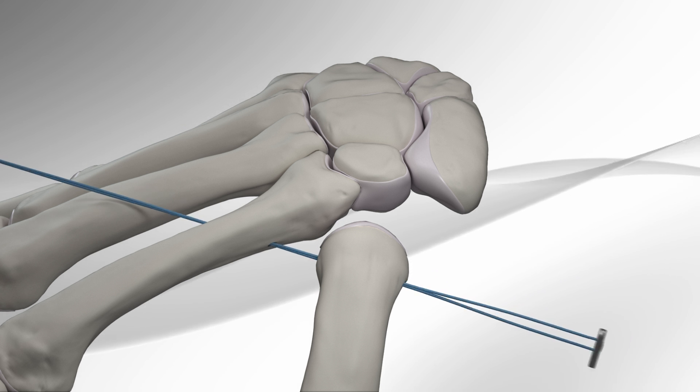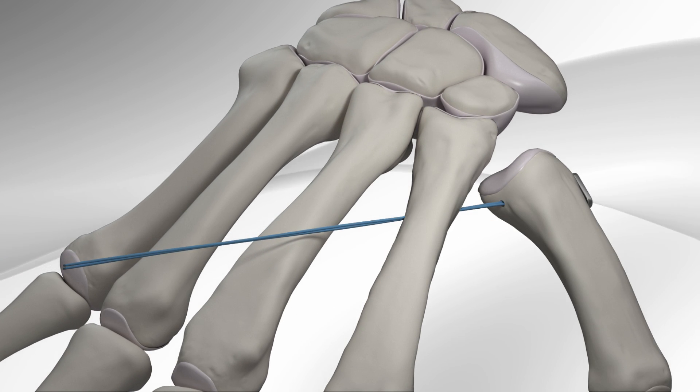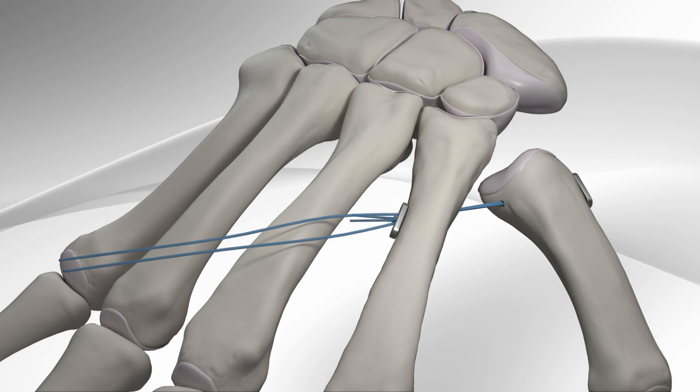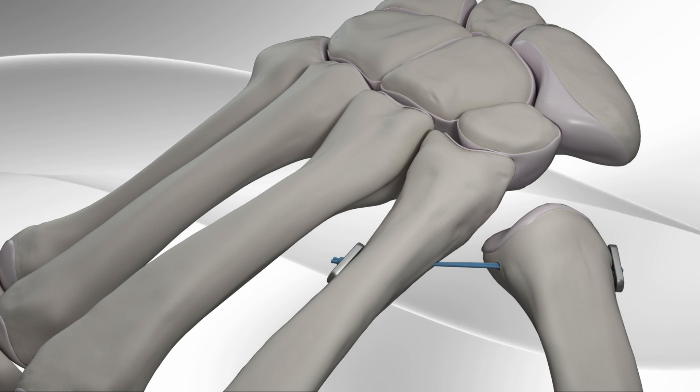The final construct is secured with a stainless steel button on the thumb and index fingers. The skin incisions are then irrigated with saline solution and stitched up. The hand is placed in a splint, protecting the operated thumb.